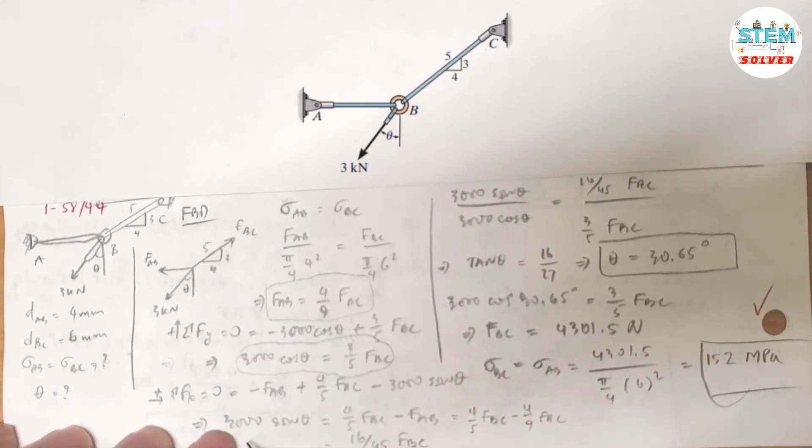So I solve for 3000 sine theta. That gives me 4/5 FBC minus FAB.